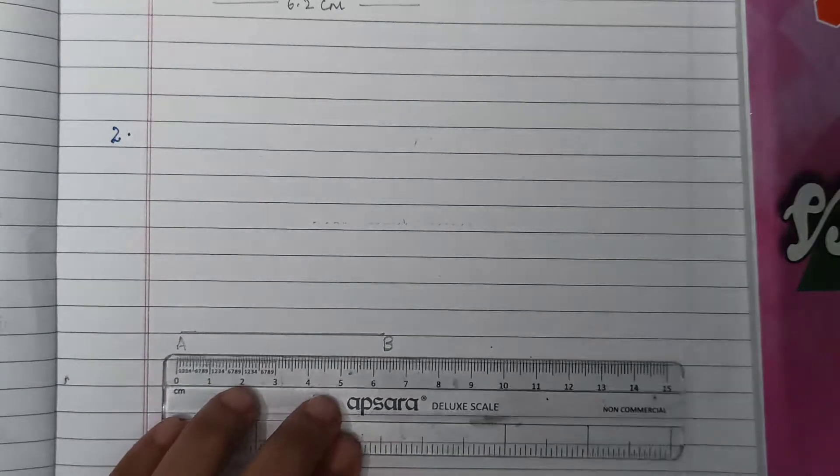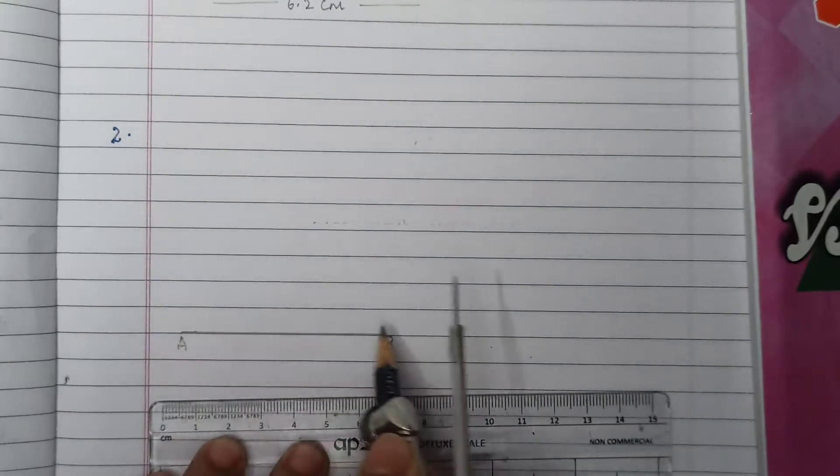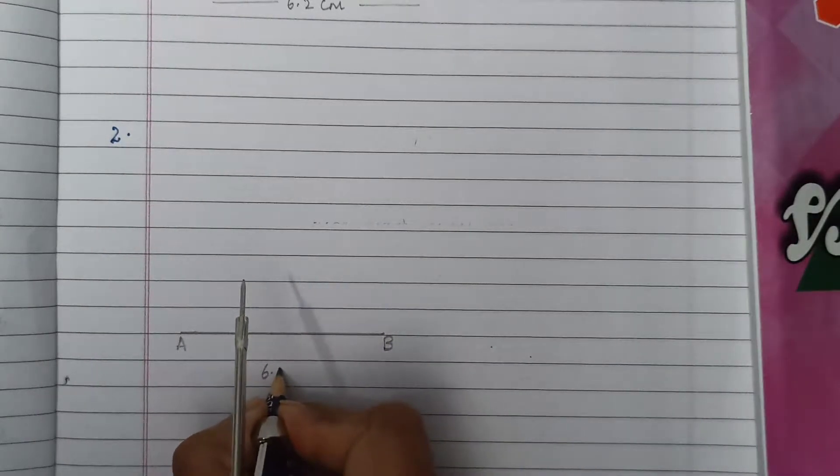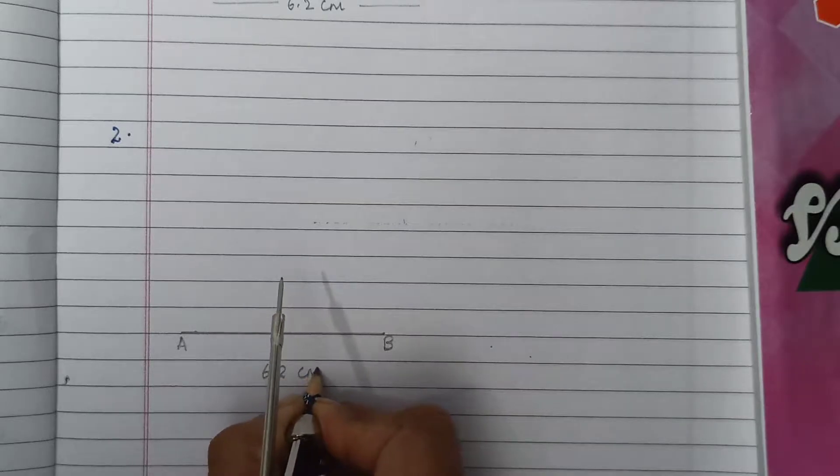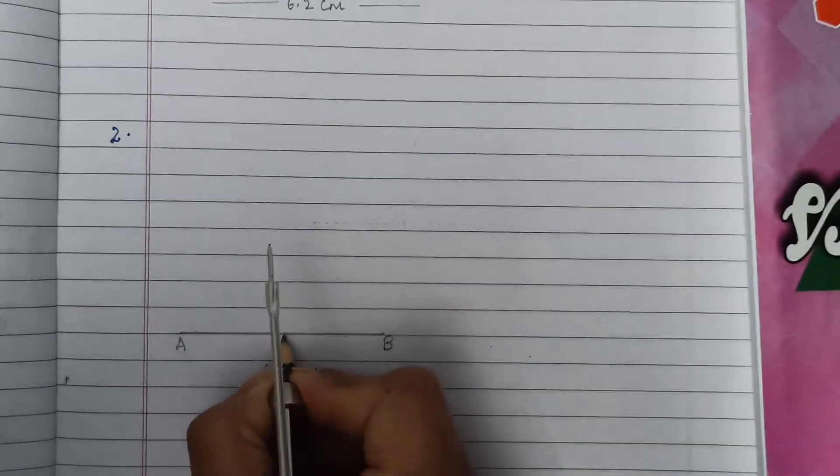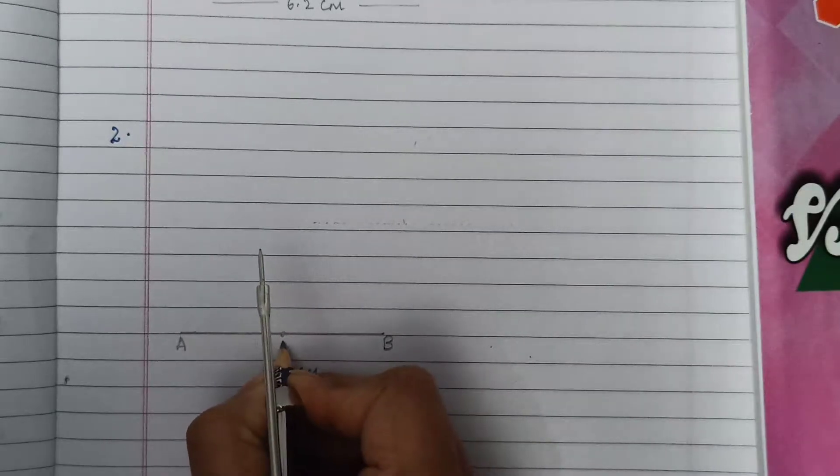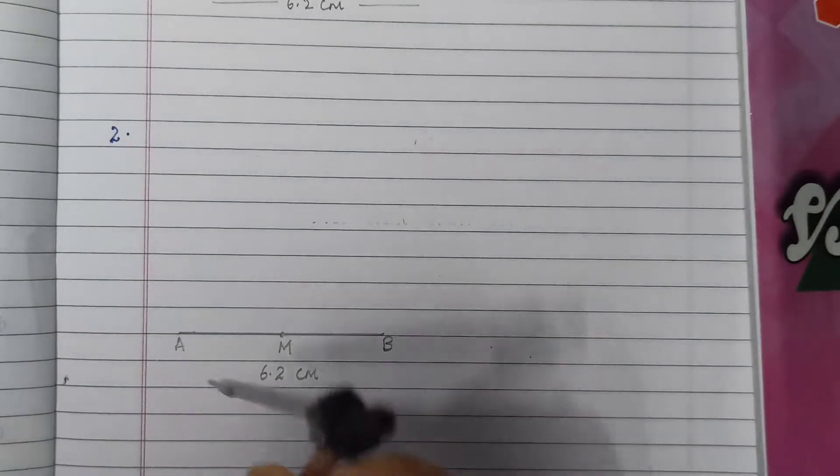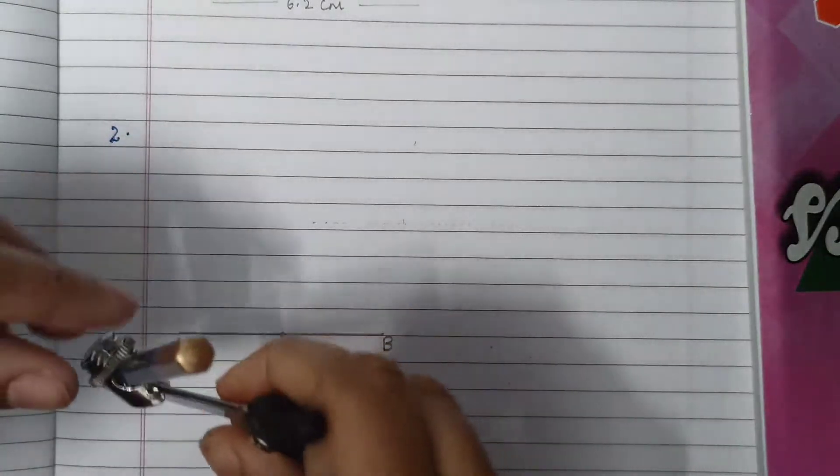First of all we'll draw line segment AB of 6.2 cm with the help of a ruler. Now let AB be the line segment of length 6.2 cm and M be a point on it.